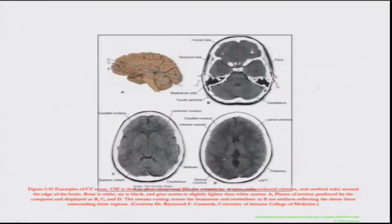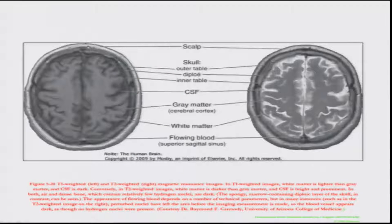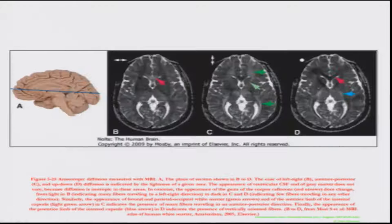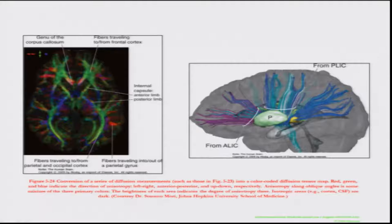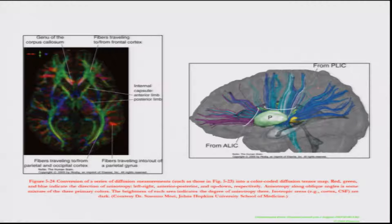These are types of images you can look at — this is a CT scan, the simplest of investigations. These are types of MRI images. And this is what I showed you earlier — DTI, diffusion tensor imaging — showing fibers traveling from the occipital cortex. This is how a DTI appears.